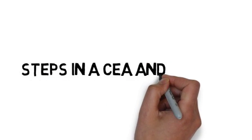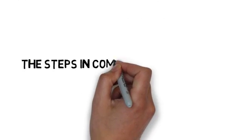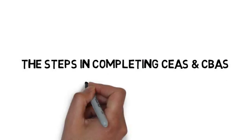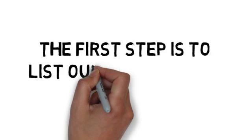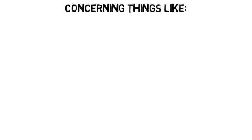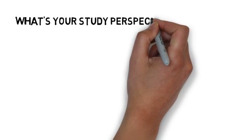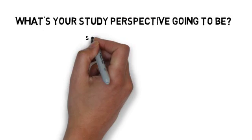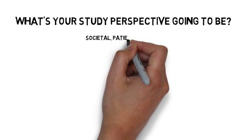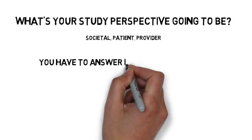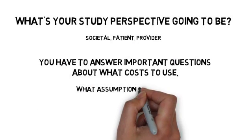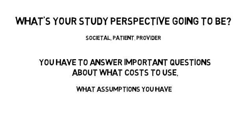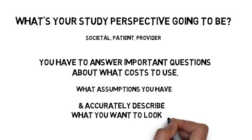The steps in completing CEAs and CBAs are very similar. The first step is to list out your options, concerning things like what your study perspective is going to be — is it societal, patient, or provider? You have to answer important questions about what costs to use, what assumptions you have, and accurately describe what you want to look at.